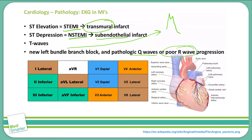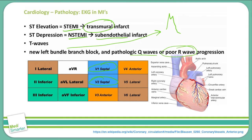Leads 2, 3, and AVF are indicative of an inferior wall myocardial infarction, and that would be a blockage of the right coronary artery. Leads V1 and V2 will be indicative of a septal or anteroseptal myocardial infarction, typically caused by the left anterior descending artery, also known as the widowmaker.